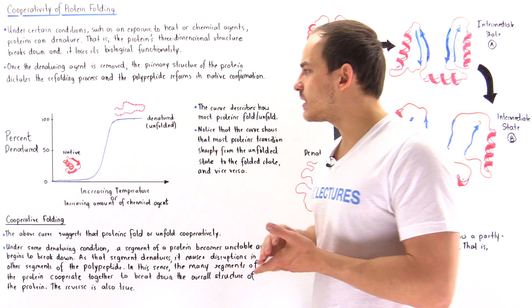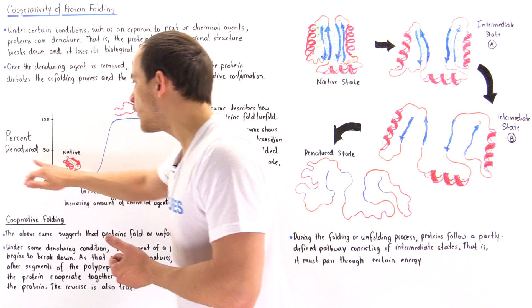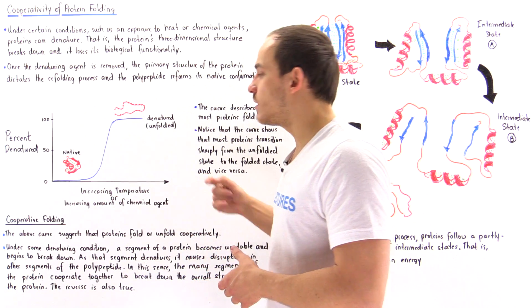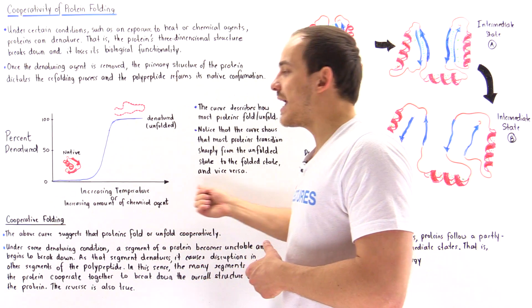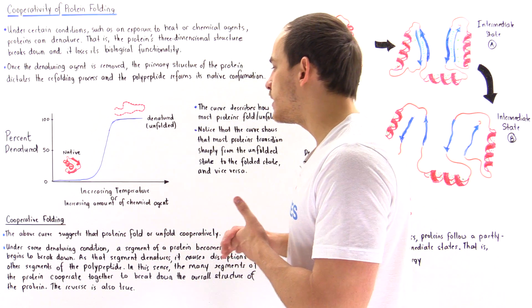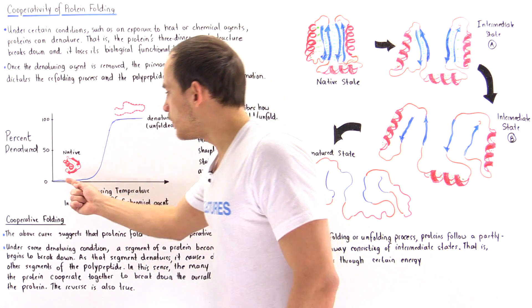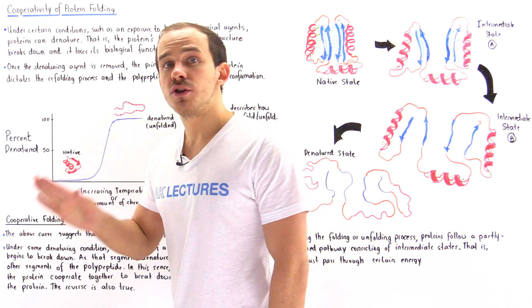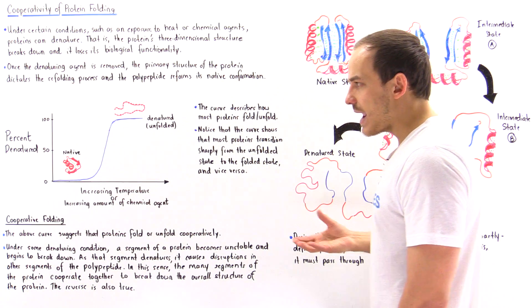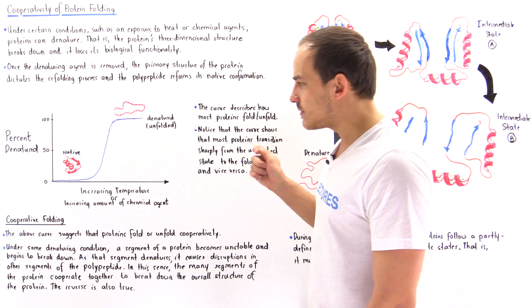Let's begin by taking a look at the following graph. The graph describes the percentage of proteins that are denatured versus the conditions the protein is under. As we go from left to right along the x-axis, we either increase the temperature or increase the amount of chemical denaturing agent. When no chemical agents are present and temperature is normal, 0% of the proteins are denatured — all exist in their fully functional folded native state.